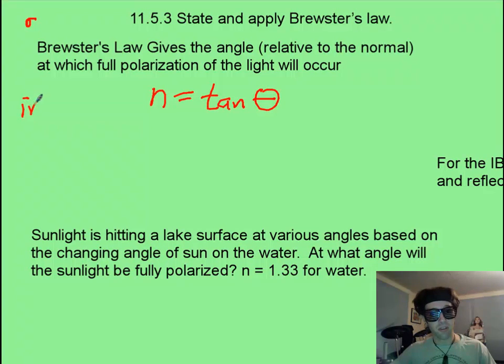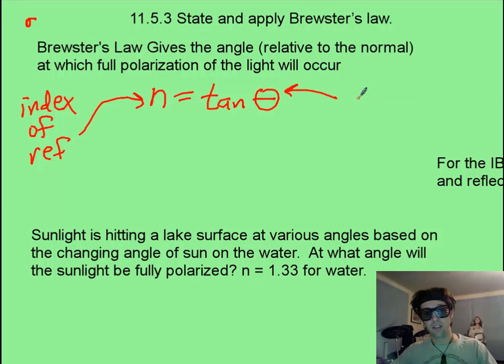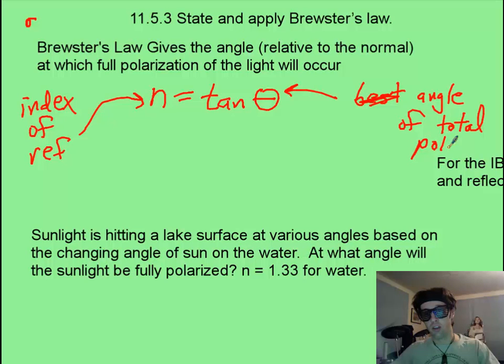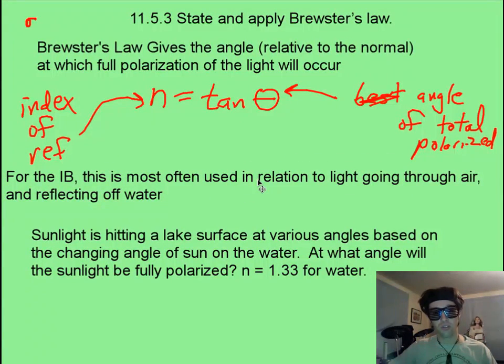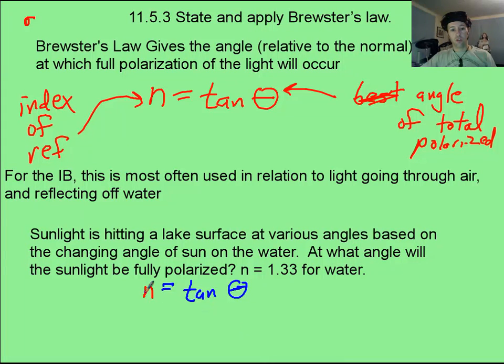And that is going to be this equation here, where we assume it's coming through air, and then n is going to be the index of refraction of the material that's hitting, such as water. And this angle is going to be the angle of total polarization. In other words, all the light will be polarized once it bounces off at this magical angle. It's almost always used for stuff going through air and reflecting off the water. So now, pause it and see if you can solve this sample problem below here.